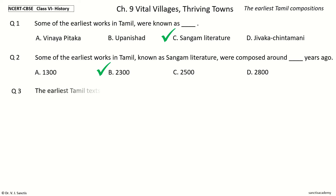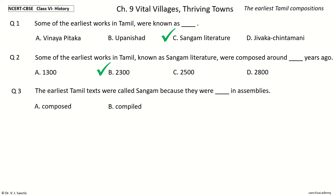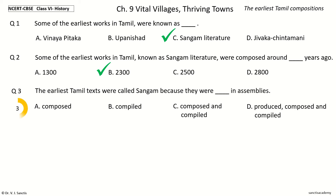Question 3. The earliest Tamil texts were called Sangam because they were blank in assemblies. The options are: composed, compiled, composed and compiled, produced. The answer is composed and compiled. The earliest Tamil texts were called Sangam because they were composed and compiled in assemblies.